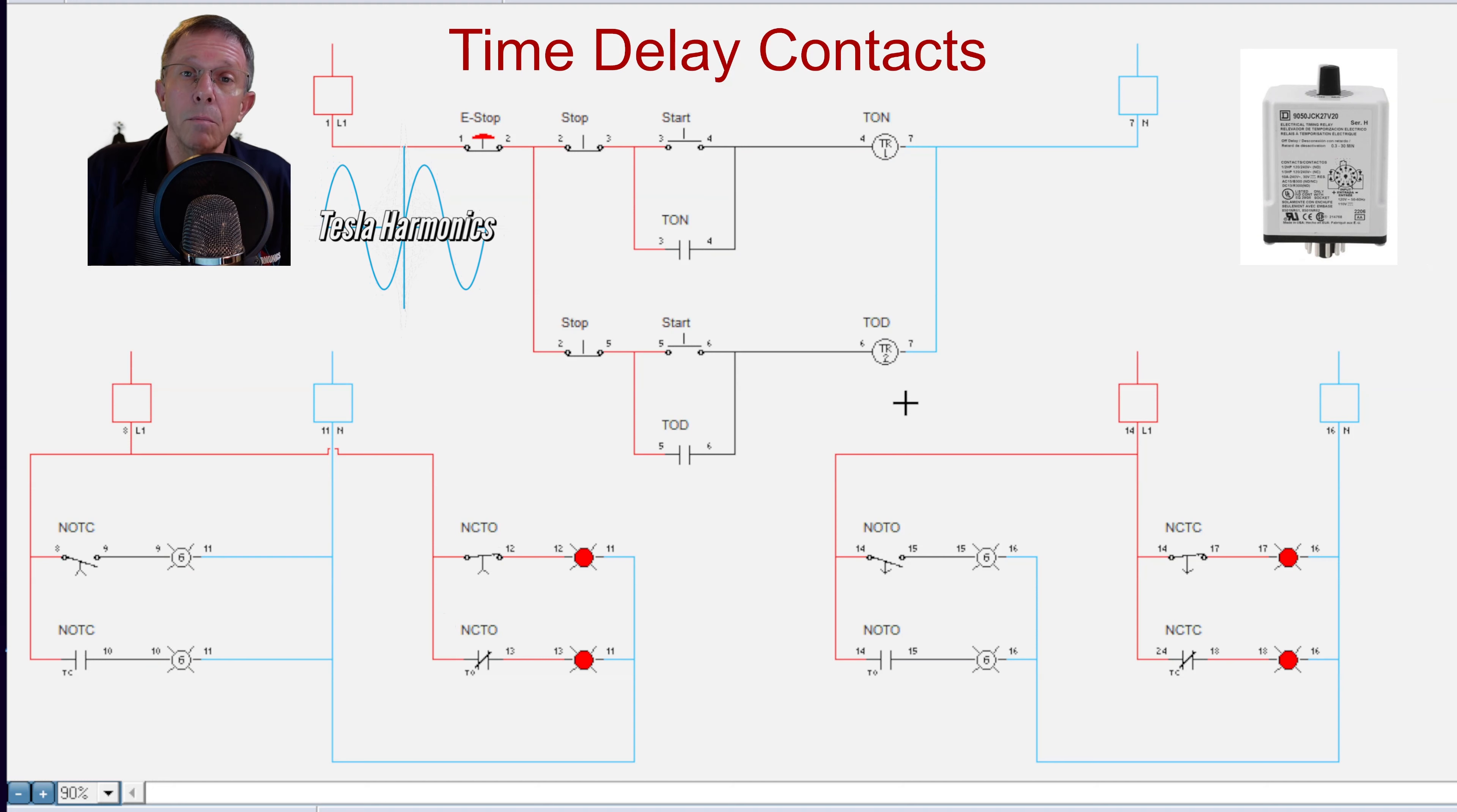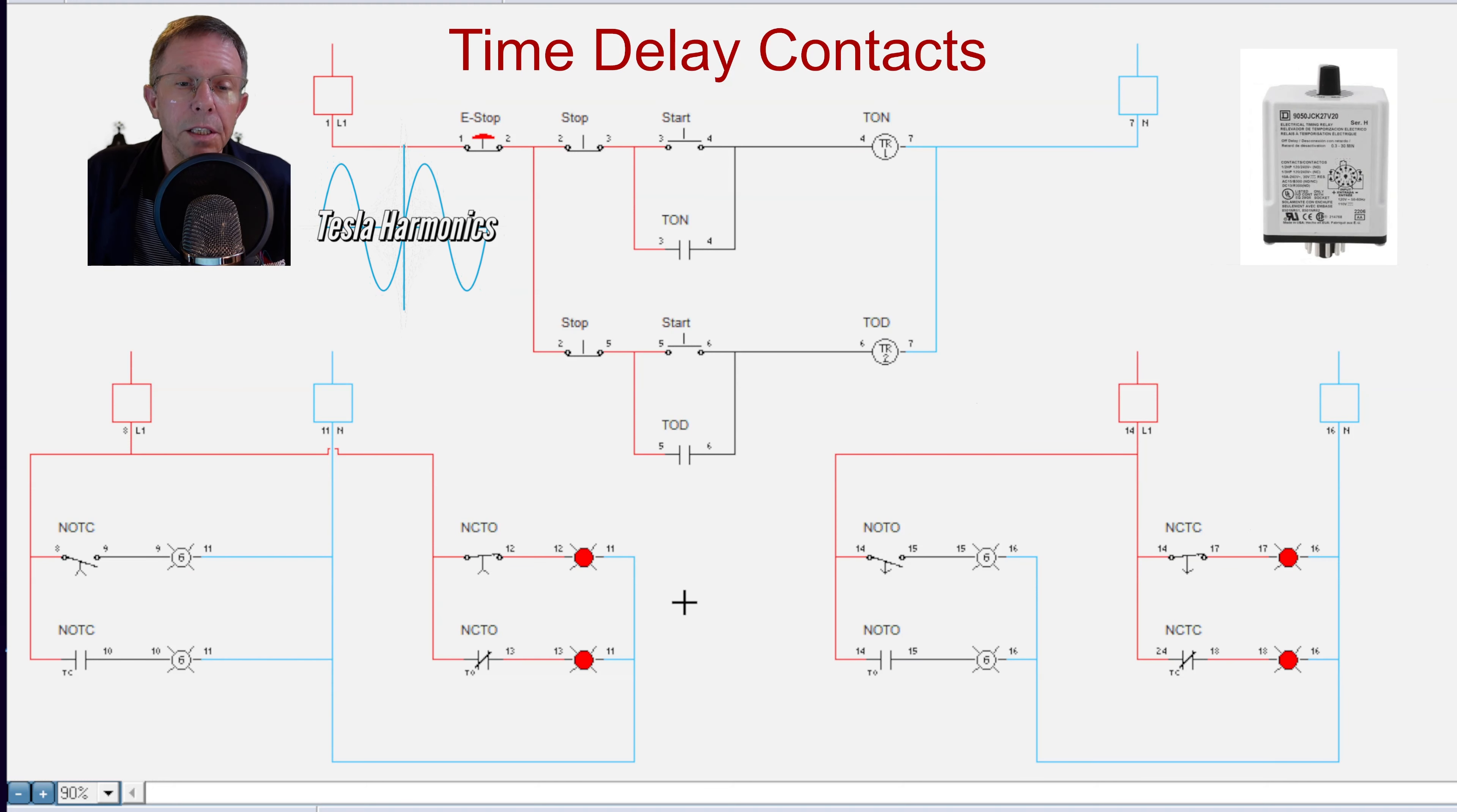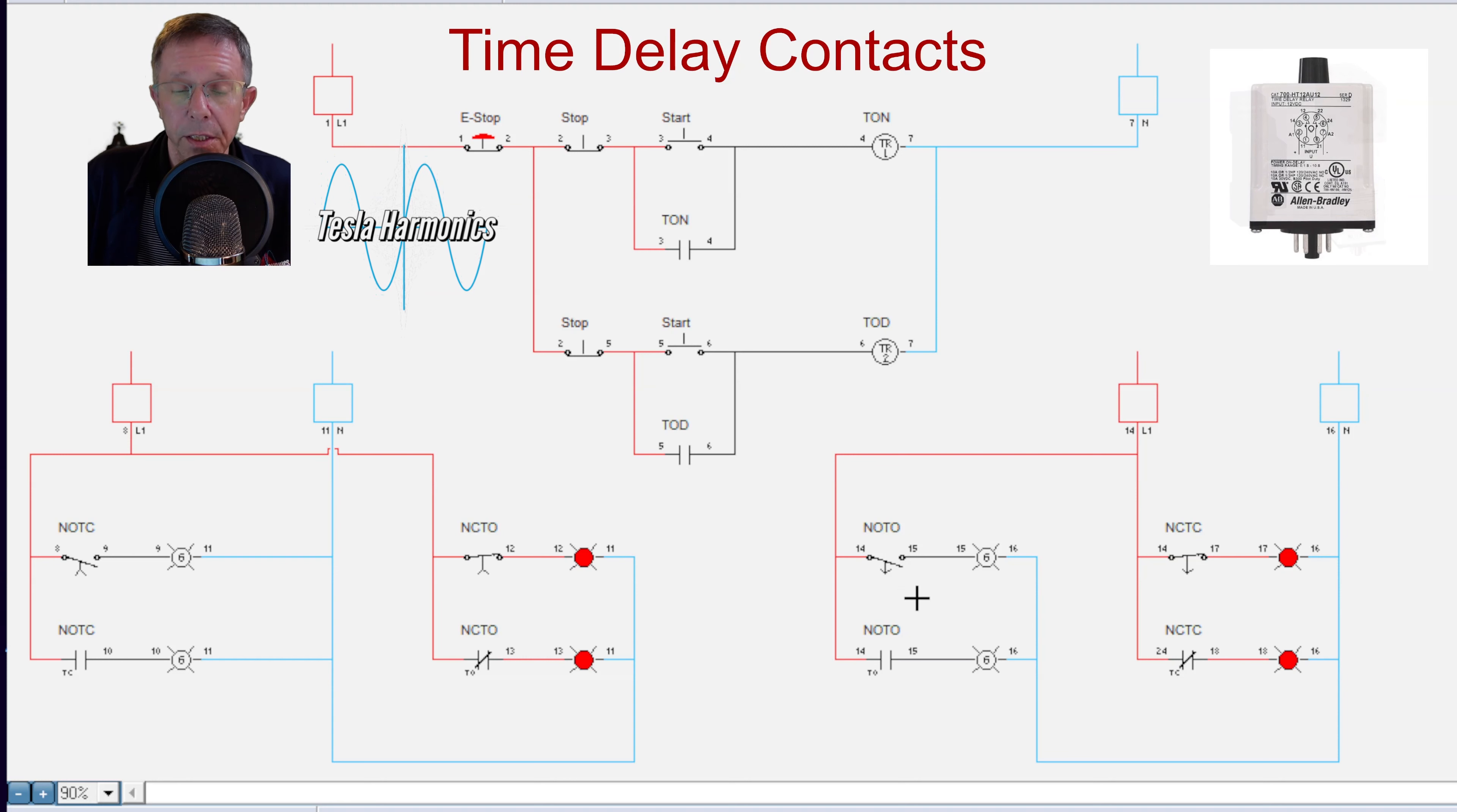Okay, so that's our time on delay. Now if we take a look at the contacts on our time off delay circuit, when I energize that time off delay coil, the two open contacts are going to immediately close because this one has the arrow pointing down. That means that it's going to immediately go the other direction and time to go the direction of the arrow. So it's going to immediately close and turn on the green light.